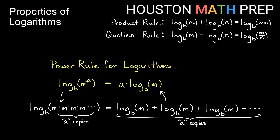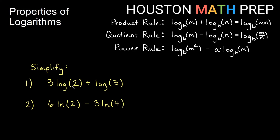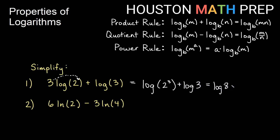Let's simplify 3 times log of 2 plus log of 3. First, apply the power rule in reverse: put the 3 inside as an exponent to get log of 2 to the third plus log of 3. We can evaluate 2 cubed as 8, giving log of 8 plus log of 3. Now the product rule: add between logs becomes multiply, so 8 times 3 gives us log of 24.